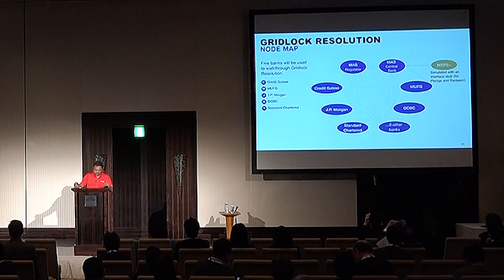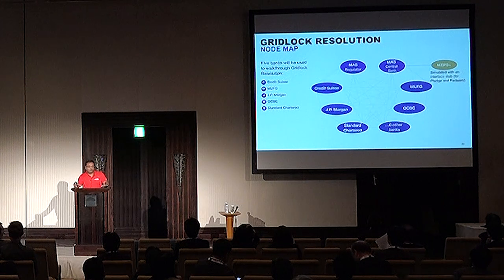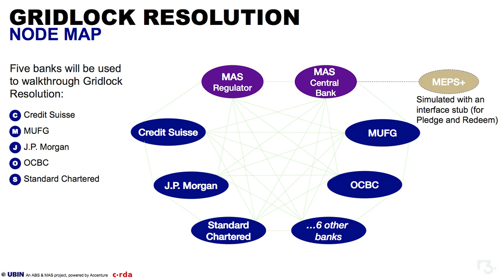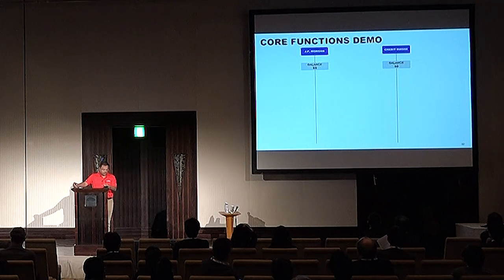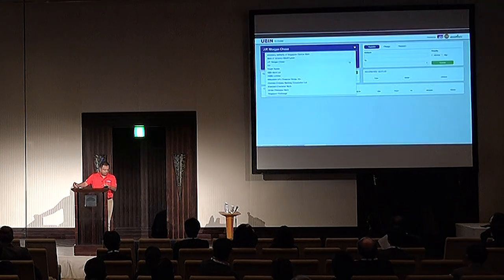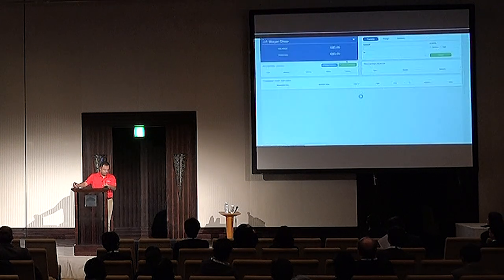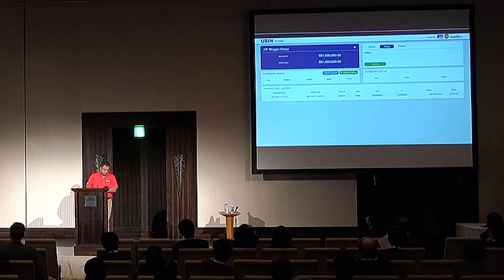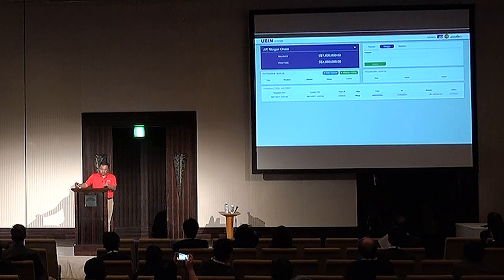In terms of decentralized gridlock resolution, what you see on the slide is a sample representation of how the system was set up — 11 banks, each represented by a node. MAS plays as central bank as well as regulator, and those two nodes were separated for simplicity, plus a simulated interface. In the scenario shown, JP Morgan is pledging MAS one million dollars, while Credit Suisse starts with a balance of zero. These are all transactions happening on the DLT platform but shown on the UI — the real Ubin demo. After pledging, JP Morgan now has a balance of one million dollars, with MAS as the issuer of the cash.